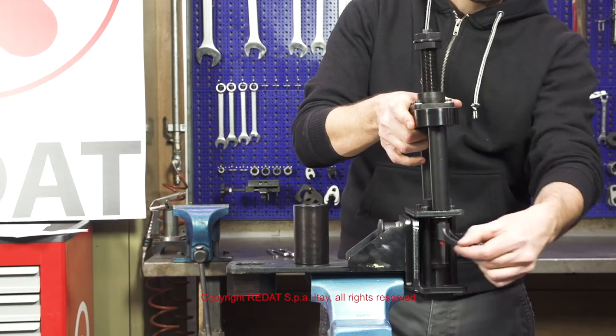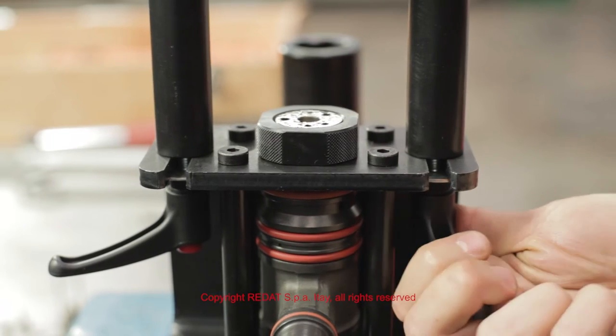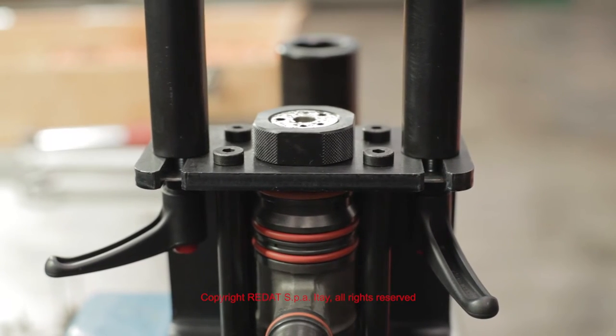After completing this operation we mount the detachable part of the equipment again, tightening the levers, always taking care that the equipment is axially aligned with the injector.